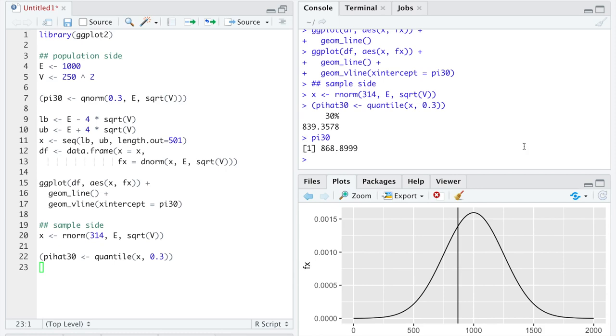And here we have π hat, a guess of π 30 to be 840, which I will reprint π 30 to show you is an okay guess for the true population parameter, the 30th percentile of 868.9.